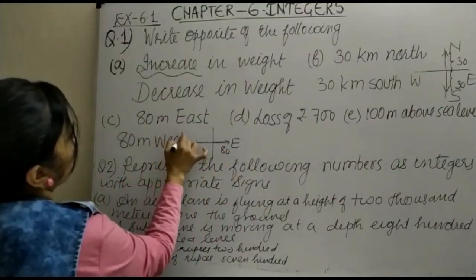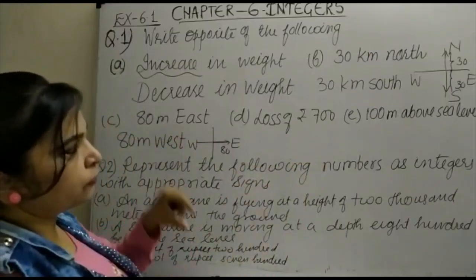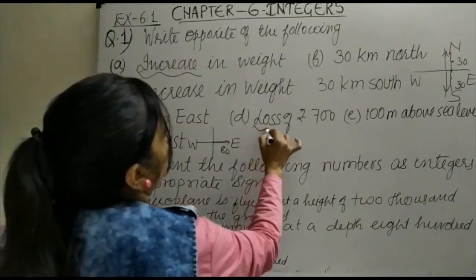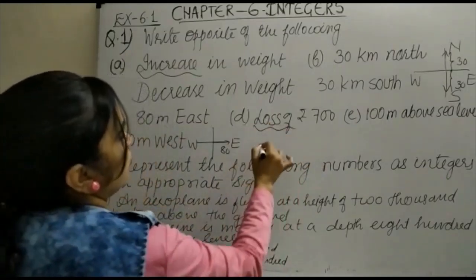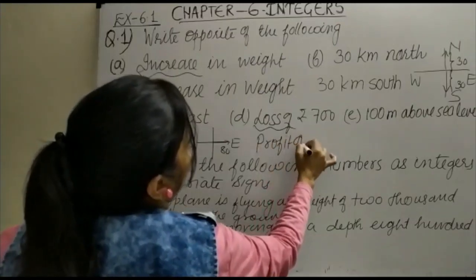Now, loss of rupees 700. Your loss of rupees 700, what is the opposite of loss? That is profit. So this becomes profit of rupees 700.